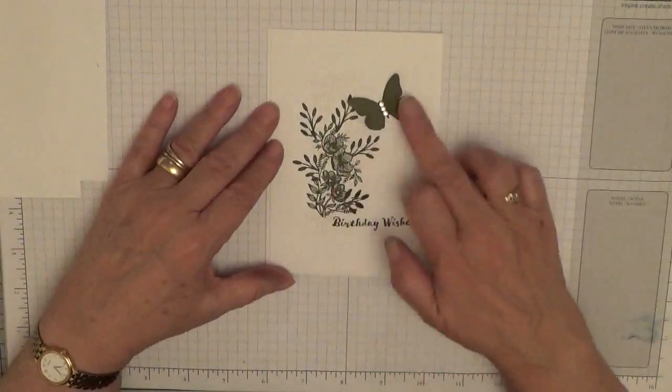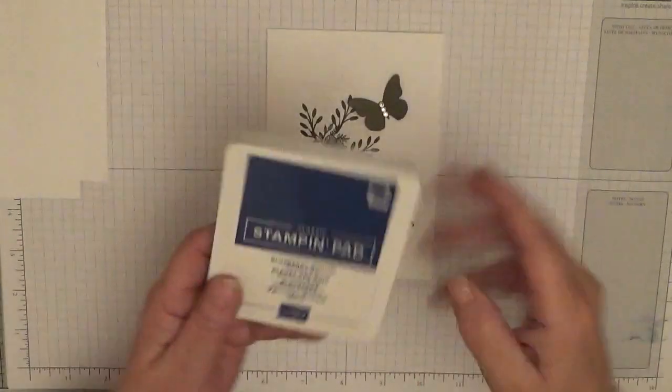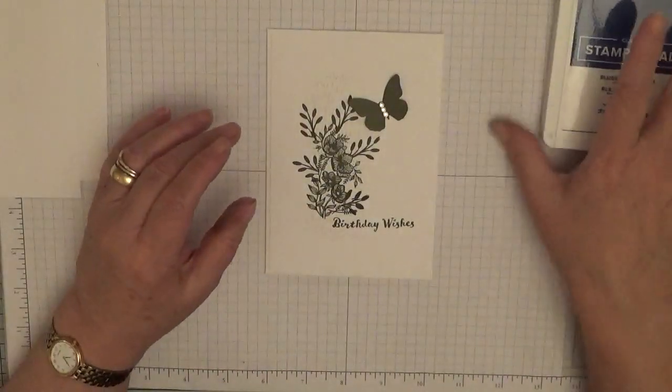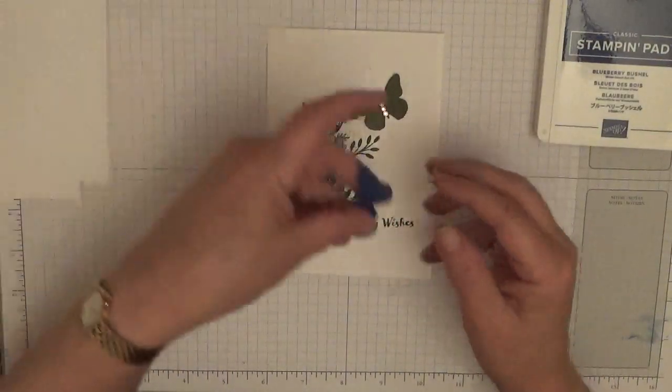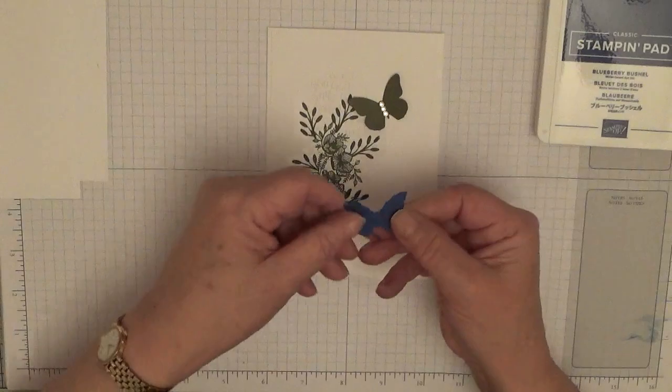I'm also changing the color to Blueberry Bushel, one of the in colors. I've never used it so I want to use that. And I've also cut out my butterfly. It's here.